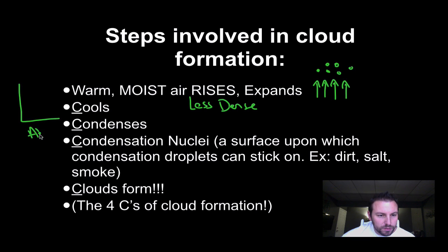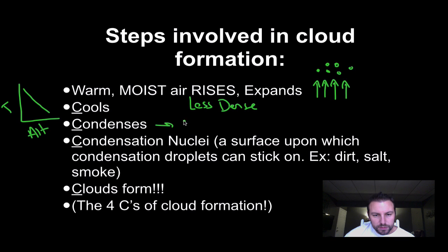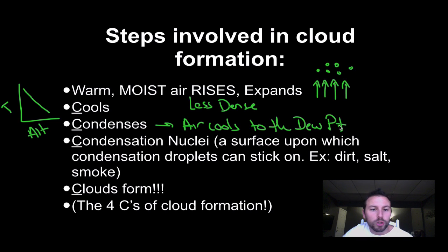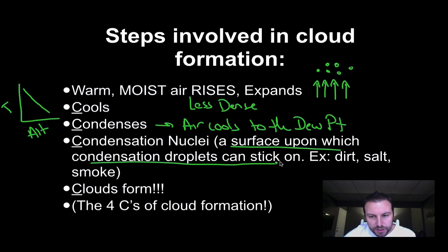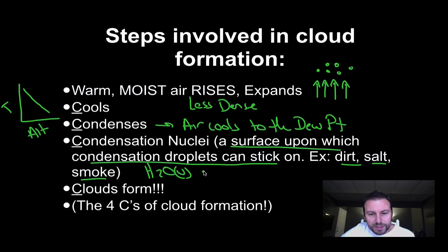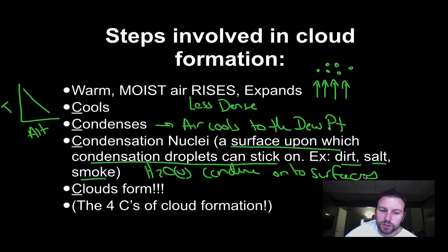Remember, as we increase our altitude, the temperature decreases. So as this air goes higher and higher up into the sky, it starts to cool down — it cools to the dew point. The air has some moisture in it that evaporated or transpired off of something, so we have water vapor in the air. That air rises up into the atmosphere, cools down, and when it cools to the dew point, as long as there's a surface — dirt, salt, smoke, pollution — the water vapor will condense onto those surfaces, and then clouds form.